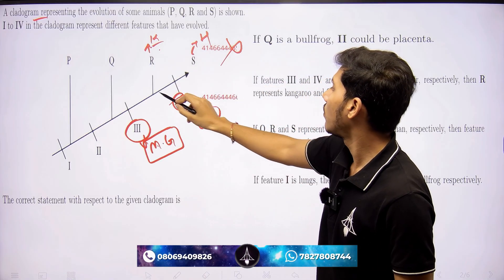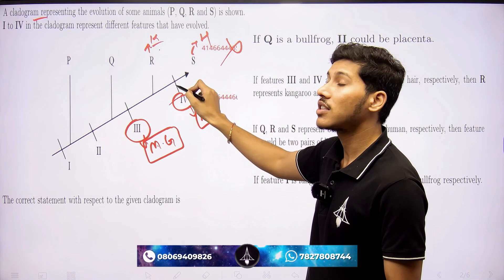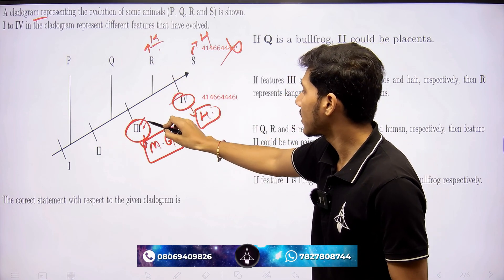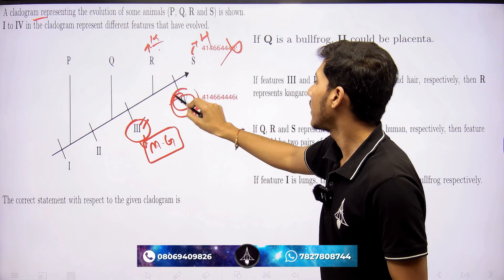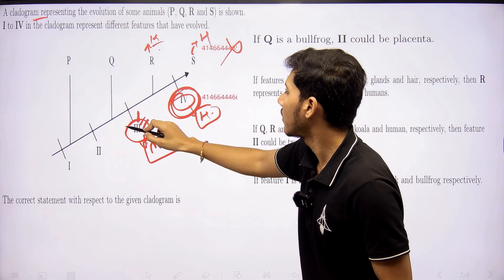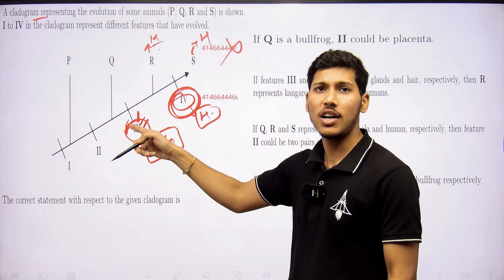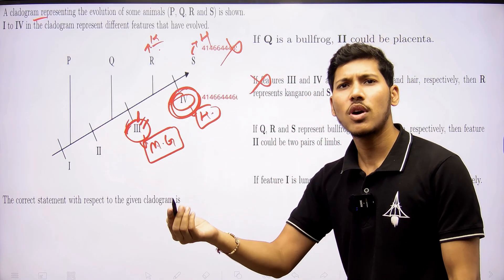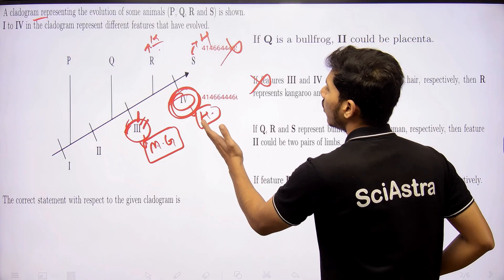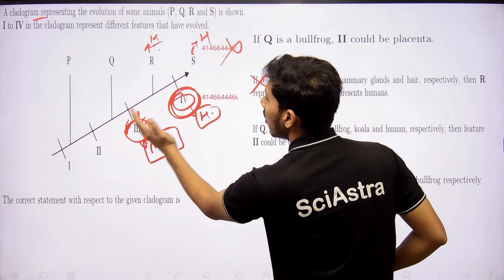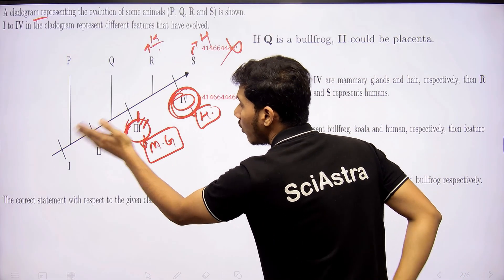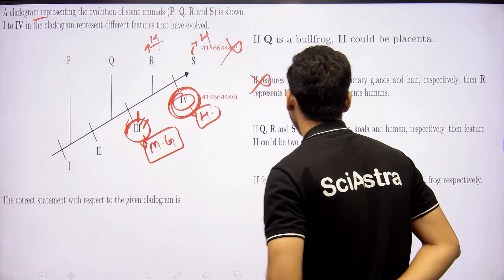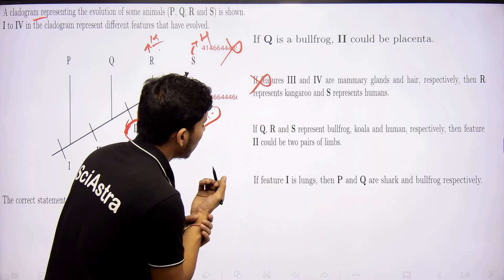But hair is written after kangaroo. That's why this statement becomes incorrect as a whole. Up to this thing, it is correct. But this hair should be also placed in the third characteristic. That's why this statement is also incorrect, because kangaroo also have hairs. If fourth one has hair, it means that all the organisms before 4 do not contain hair. So that's why this is incorrect.